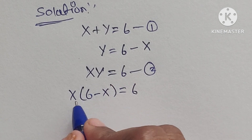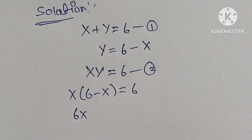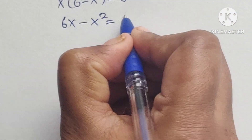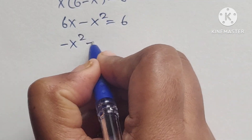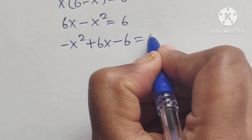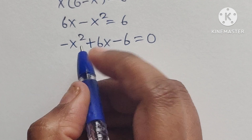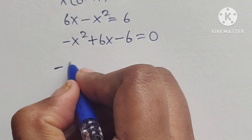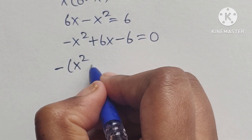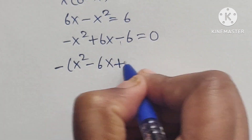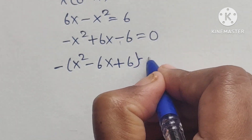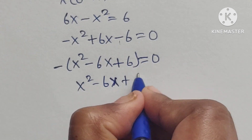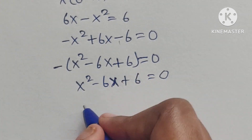Multiplying out: x times 6 gives 6x, and x times x gives minus x squared, equals 6. So we have minus x squared plus 6x minus 6 equals 0. Taking out the negative sign, this becomes x squared minus 6x plus 6 equals 0.